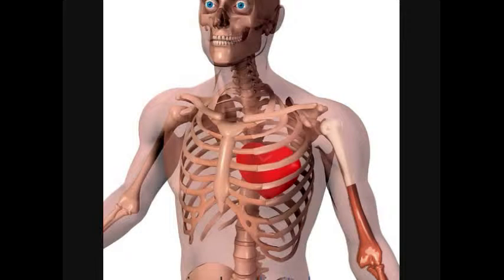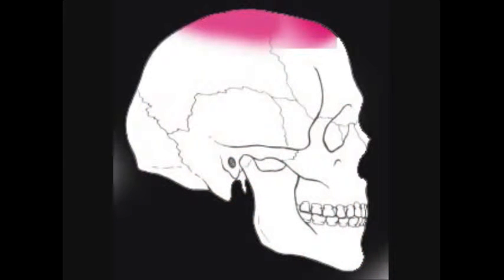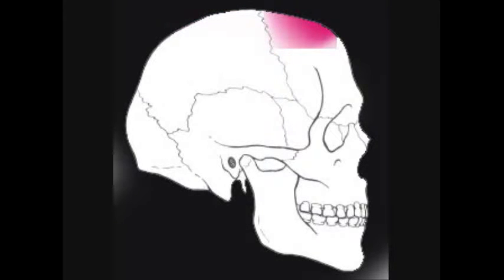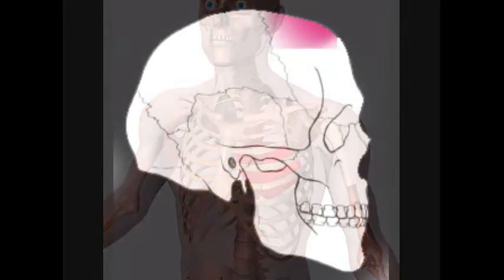That is also the hekesh of tefillin shel rosh. Just like tefillin shel yad — you can only be mater half of the arm, because only half of the arm sees the heart — so too tefillin shel rosh: not the entire skull is kosher, but only up to the kotkoit, up to the soft part of the head. That is on the chatzi skull, half the skull, from the hairline up to the kotkoit. Tefillin shel yad teaches tefillin shel rosh where to put on. Shel yad is only plug zroya, half the zroya; shel rosh also, half the skull.